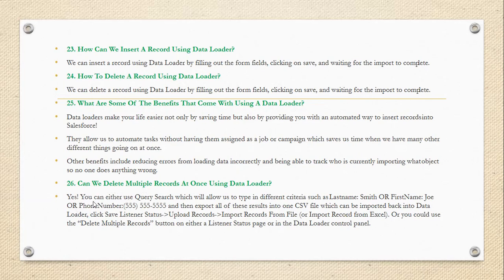Can we delete multiple records at once using the Data Loader? Yes, you can either use the query search, which will allow you to type different criteria such as last name, first name, or phone number, and then export all of the results into a CSV file which can be imported back into Data Loader. Click save and upload the records and import the records from the file, from Excel. Or you could use the 'Delete Multiple Records' button either on the list view page or in the Data Loader control panel.